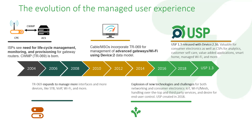Since then we've gone through three revisions. The most recent was USP 1.3, released with TR181 device 2.16. There's a whole bunch of things that have been added to really enhance how all of these things are done for operators — specifically things like big data analytics, customer self-care, adding value-added applications to the gateway, managing smart home, and having a complete picture of managed Wi-Fi and more.